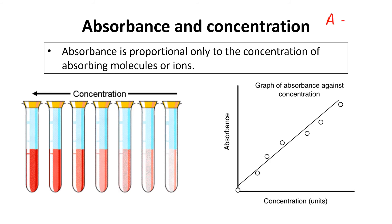According to the Beer-Lambert equation A = εCL, if we keep ε and L constant, then A is proportional to concentration — meaning if concentration increases, absorbance also increases. Absorbance is proportional only to the concentration of absorbing molecules or ions. For example, a series of concentrations of the same sample can be prepared and absorbance measured for each; as concentration increases, absorbance increases. This relationship can be used to find the concentration of an unknown solution by preparing a calibration series and plotting absorbance versus concentration.